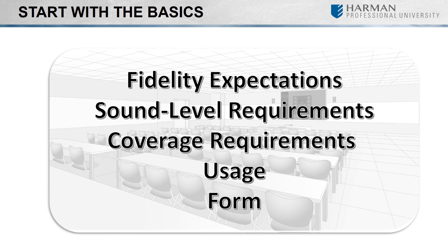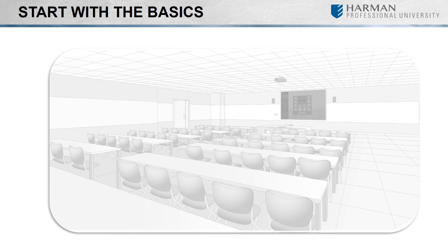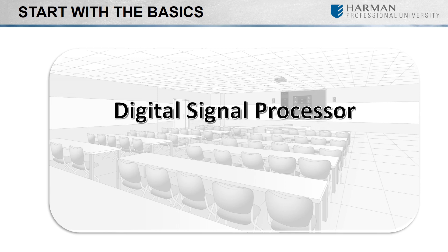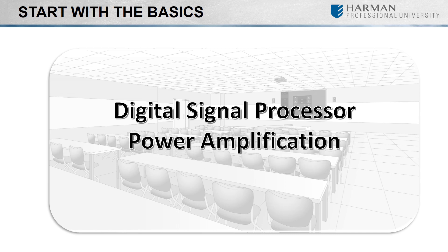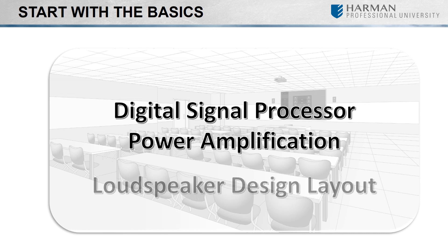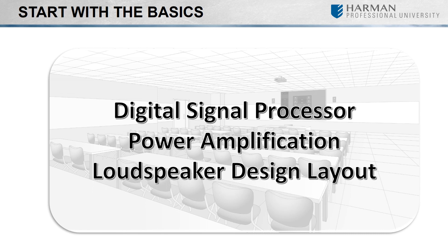And form: do they want in-ceiling or on-wall speakers? These are just a few of the questions you will need to ask. Now that we know what the client is looking for, we need to start looking at the basic parts of the audio design. Will digital signal processors be required to control the volume and other audio characteristics of the room? What about power amplification? It's hard to determine amplifier needs until we look at the loudspeaker design, so let's start there.